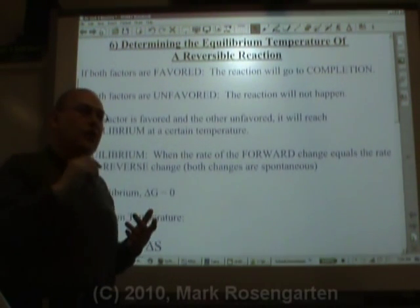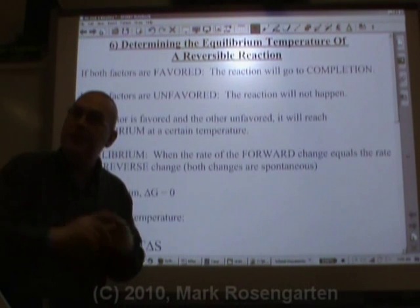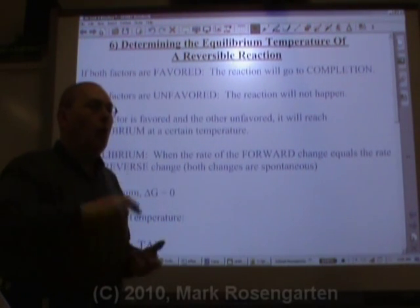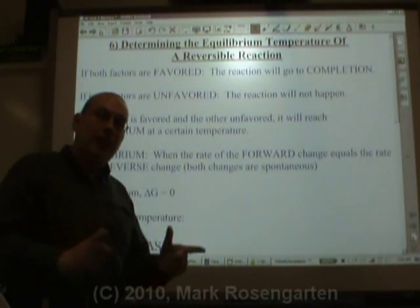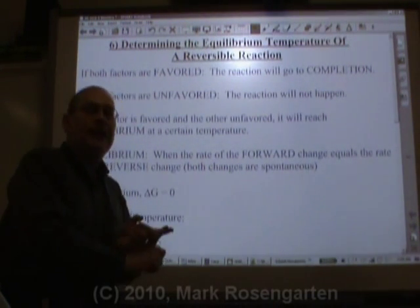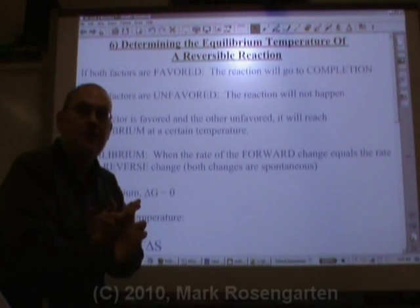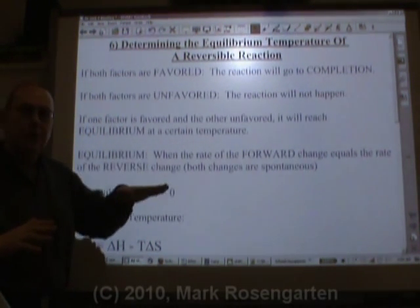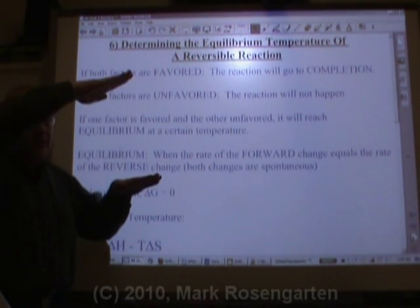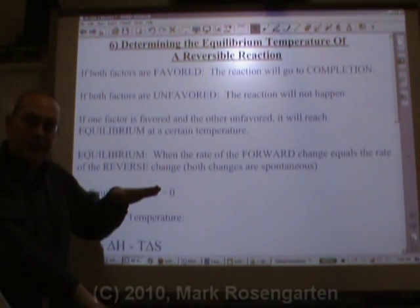So we said that a reaction can either be always spontaneous if both factors are favored, or always non-spontaneous if both factors are unfavored, or sometimes spontaneous if one factor is favored and the other factor is unfavored. If it's sometimes spontaneous, there will be a temperature at which it goes from being spontaneous to non-spontaneous.